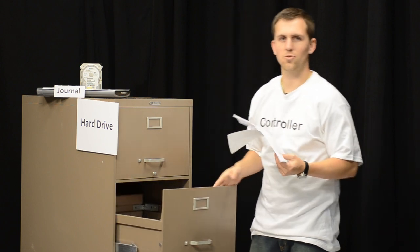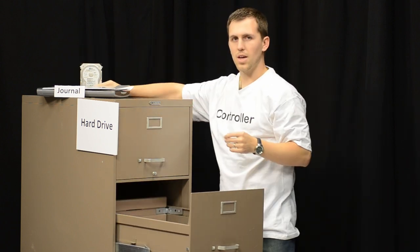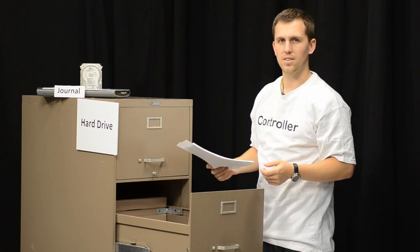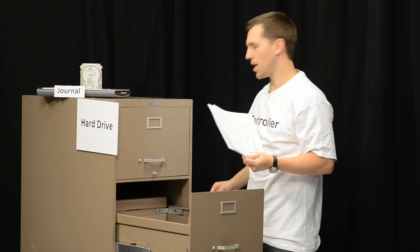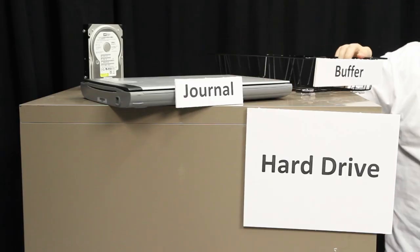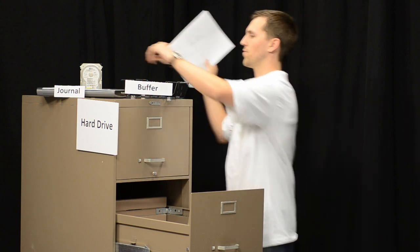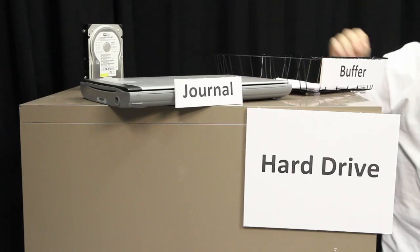You see, the journal is responsible for staging that information and making sure that the information gets written properly. Once you scan it into the journal, then you can write it to the disk. It does take a little bit longer to write files to the hard drive, but you can also use that time to store that information in a buffer. The buffer allows you to first stage things into the journal and then put it in the buffer to free up time for the controller.